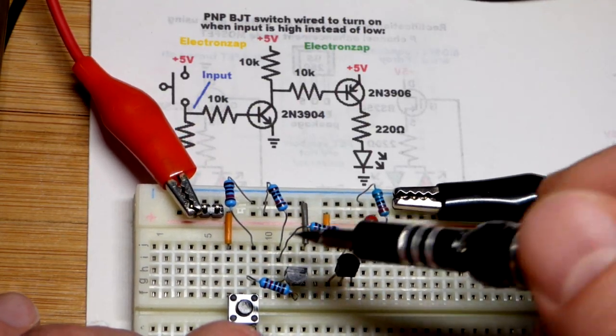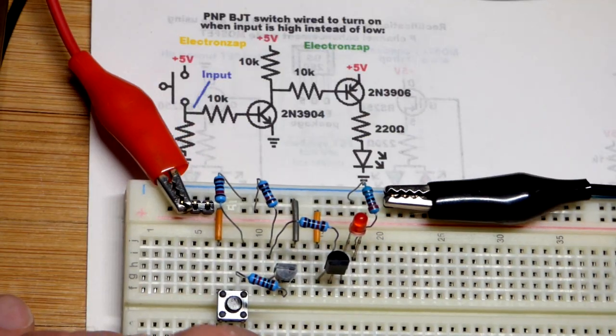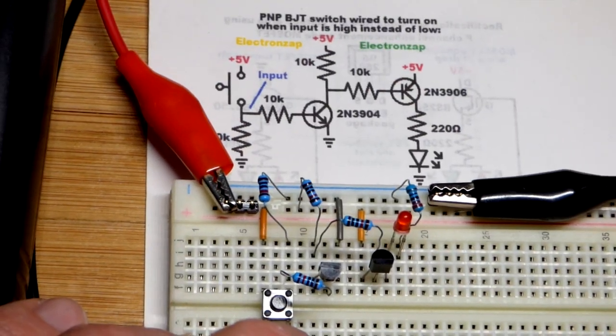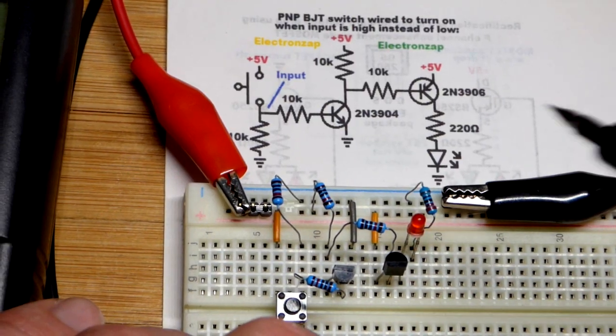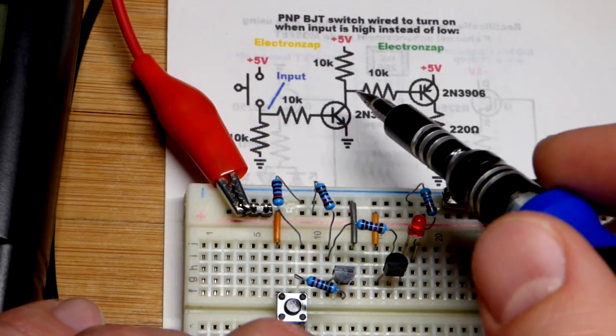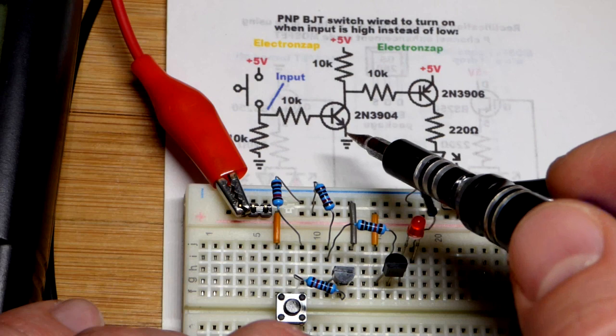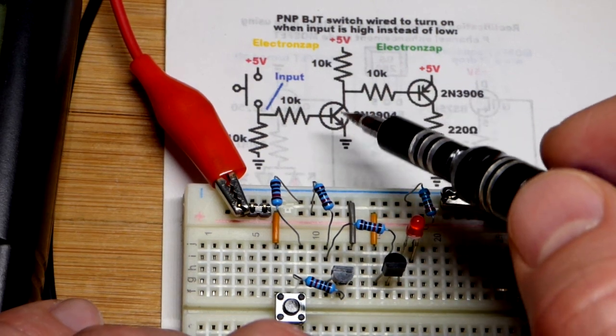Now we have the NPN bipolar junction transistor. To get a low signal to the PNP transistor and turn it on, we have to turn on the NPN transistor that connects the ground.